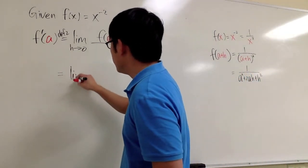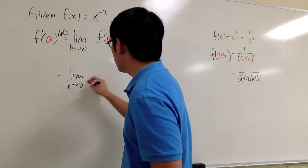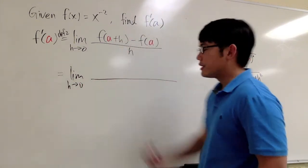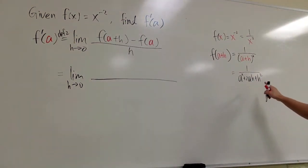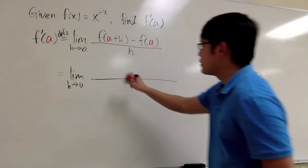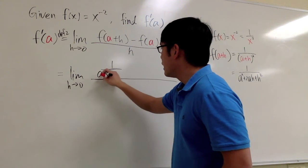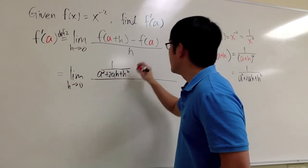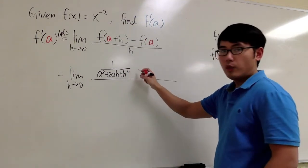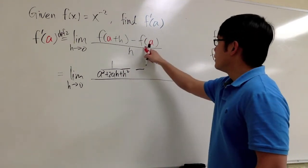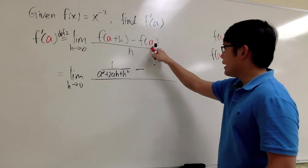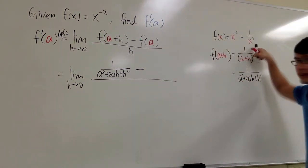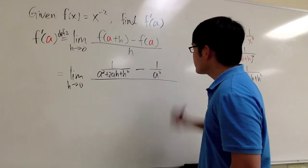Now let's write this down. This is the limit as h goes to 0. For f of a plus h, we have 1 over a squared plus 2ah plus h squared. Then we subtract f of a. To get f of a, we just plug in a for x, giving us 1 over a squared. All of this is divided by h.